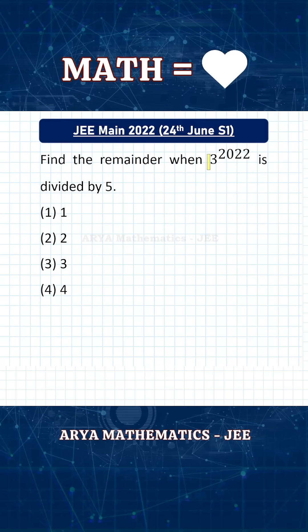Find the remainder when 3 raised to 2022 is divided by 5. In JEE Main, the problem on remainder calculation is very common. Generally when we solve these types of problems we use binomial theorem, but in this video I will explain another interesting method of finding remainder when the number is divided by 5.